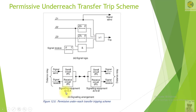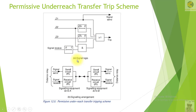At the remote end relay, as soon as it receives the signal and it has picked up in Zone 2 in the forward direction, if it is also picked up in Zone 2 in the forward direction, then it will trip with the given time T as per the setting. This is an example of the transfer trip scheme.